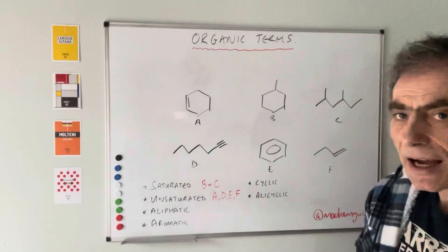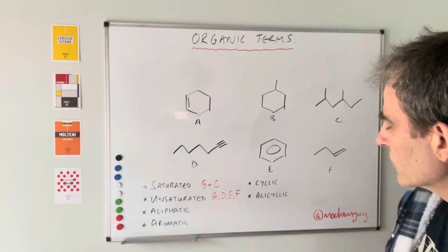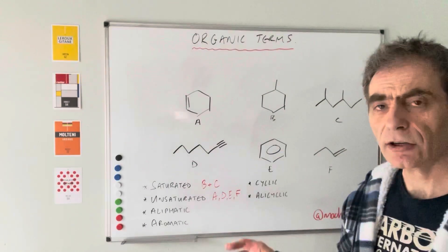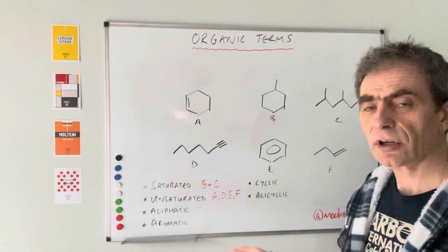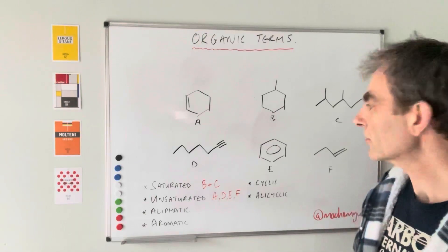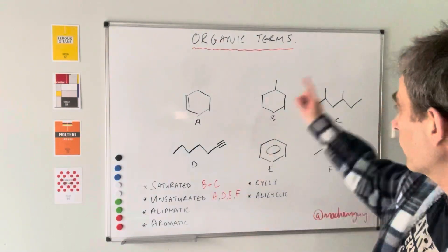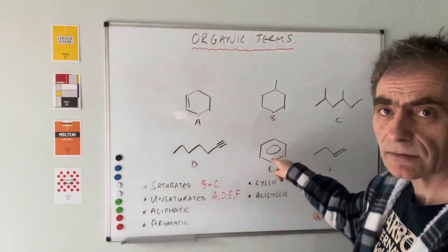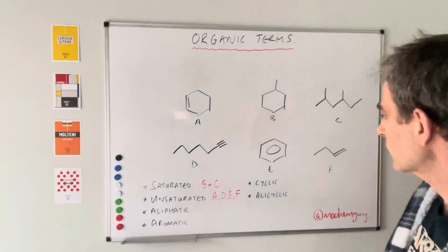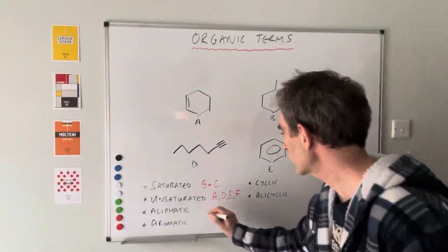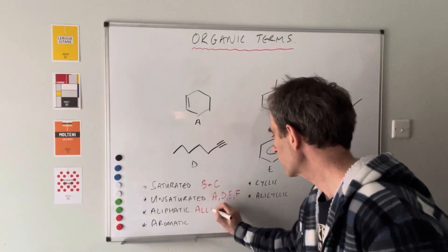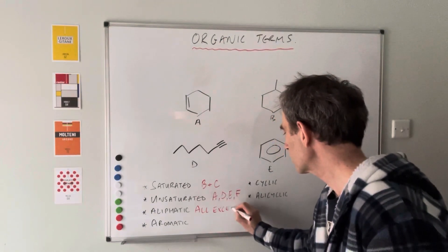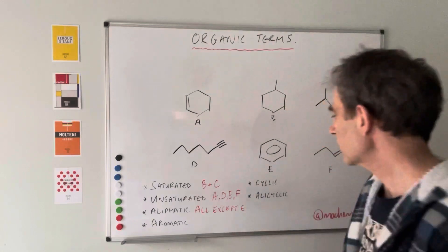An aliphatic compound is an organic compound that does not contain a benzene ring. So it's all of them apart from E. Just write: all except E.